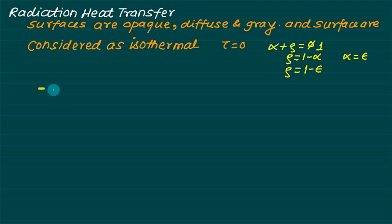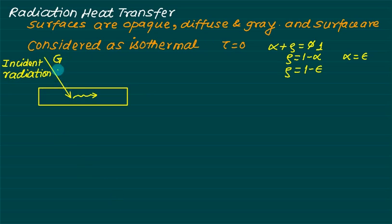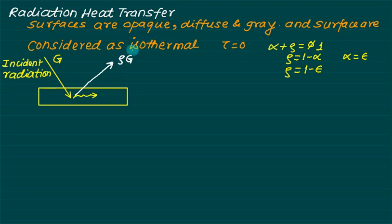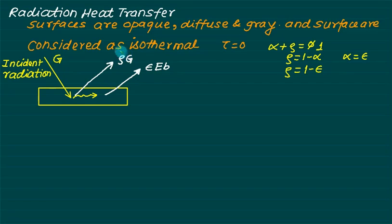Consider a body with incident radiation G (irradiation). As the radiation falls on the body, some energy is reflected equal to ρG. Some energy is absorbed, and nothing is transmitted because τ = 0 (opaque assumption). Because of this, the temperature of the body increases and it also starts emitting energy depending on the emissivity ε.